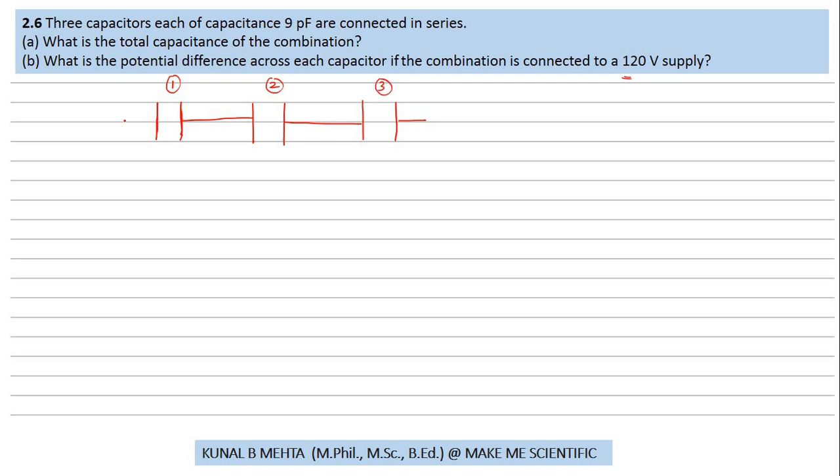Now these three capacitors are connected with a battery of 100 volts. I always tell my viewers to be very careful when they draw capacitors and battery. The positive terminal is longer than the negative one, whereas the capacitor plates are of equal length.